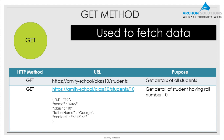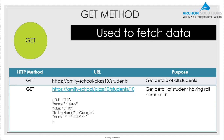Instead of all students in class 10, suppose I am interested in one particular student — Suzy. I search by the name Suzy on the website. Behind the scenes, the front-end invokes the back-end for students in class 10 and filters for Suzy, who has roll number 10. The URL would look like: https://amityschool/class10/students/10. The back-end knows that '10' means the roll number — this is the contract between the front-end and the back-end.